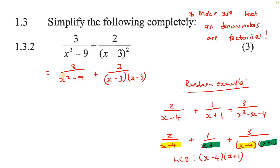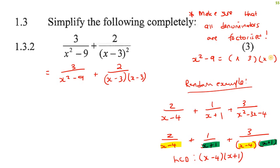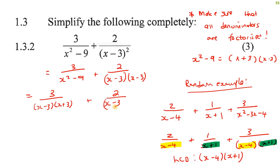This one is actually a difference of squares. If you factorize x squared minus 9, you can turn that into (x plus 3)(x minus 3) — one's a plus, one's a minus, that's the difference of squares. So that's going to give us (x minus 3)(x plus 3) plus 2 over (x minus 3)(x minus 3).